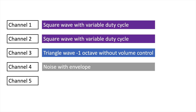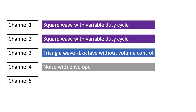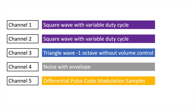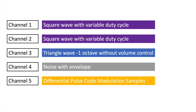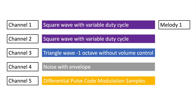The 4th channel was a noise generator that could be shaped with the help of an available envelope. And the last one was a differential pulse code modulation sample oscillator that could play sounds like snare and kick drums. The problem with that is that out of those 5 channels, only 3 of them could be used for pitched sounds, leaving the remaining 2 for noises or rhythmic elements of the music.